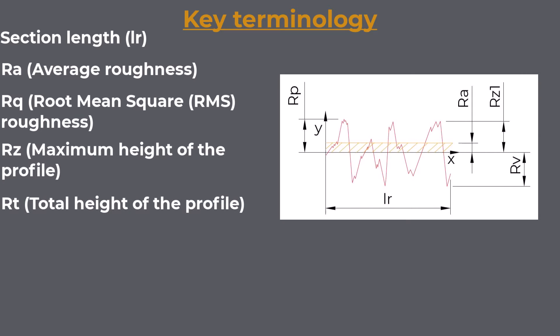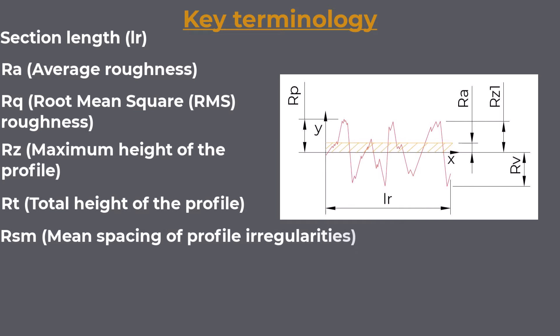RT — Total height of the profile: The distance between the profile's highest peak (RP) and lowest valley (RV) within the section length, capturing the full vertical extent of the surface irregularities. RSM — Mean spacing of profile irregularities: The average distance between consecutive local peaks within the section length, giving insights into the spacing of surface features — crucial for applications like lubrication retention. RMR — Material Ratio Curve: Represents the ratio of the profile material above a certain depth, used to determine the bearing ratio or the proportion of the surface that carries the load — particularly relevant in sealing applications.